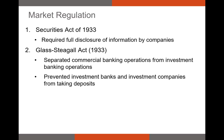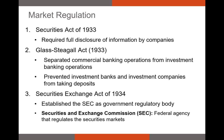Congress also passed the Glass-Steagall Act, which broke up banking operations. This act prevented brokers, commercial banks, and investment banks from engaging in each other's operations — meaning investment banks and investment companies could no longer take deposits from customers. It also created the FDIC and federal deposit insurance, which is why if your bank fails, your deposits are protected. The following year, Congress passed the Securities Exchange Act, which created the SEC and invested it with the power to regulate the buying and selling of securities, investigate securities fraud and insider trading, and oversee brokerage firms, transfer agents, clearing agencies, and self-regulatory organizations like the NASDAQ and NYSE.